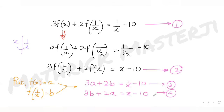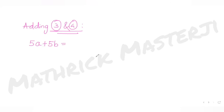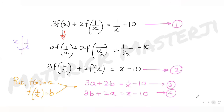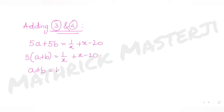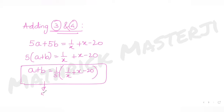Adding equations 3 and 4: 3a + 2a = 5a, and 3b + 2b = 5b, so we get 5(a + b) = 1/x + x - 20. Let's call this equation 5.